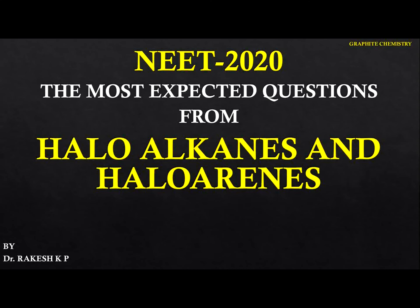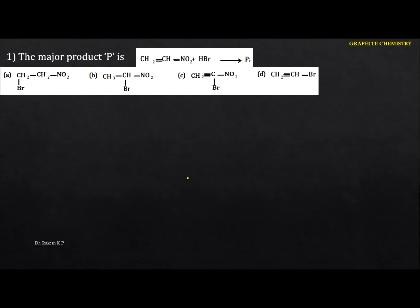Hello students, in this video I am going to solve the most expected questions in NEET 2020 from the chapter haloalkanes and haloarenes. Let me solve the questions one by one. The major product P in the following reactions — let me write the particular reactions here.